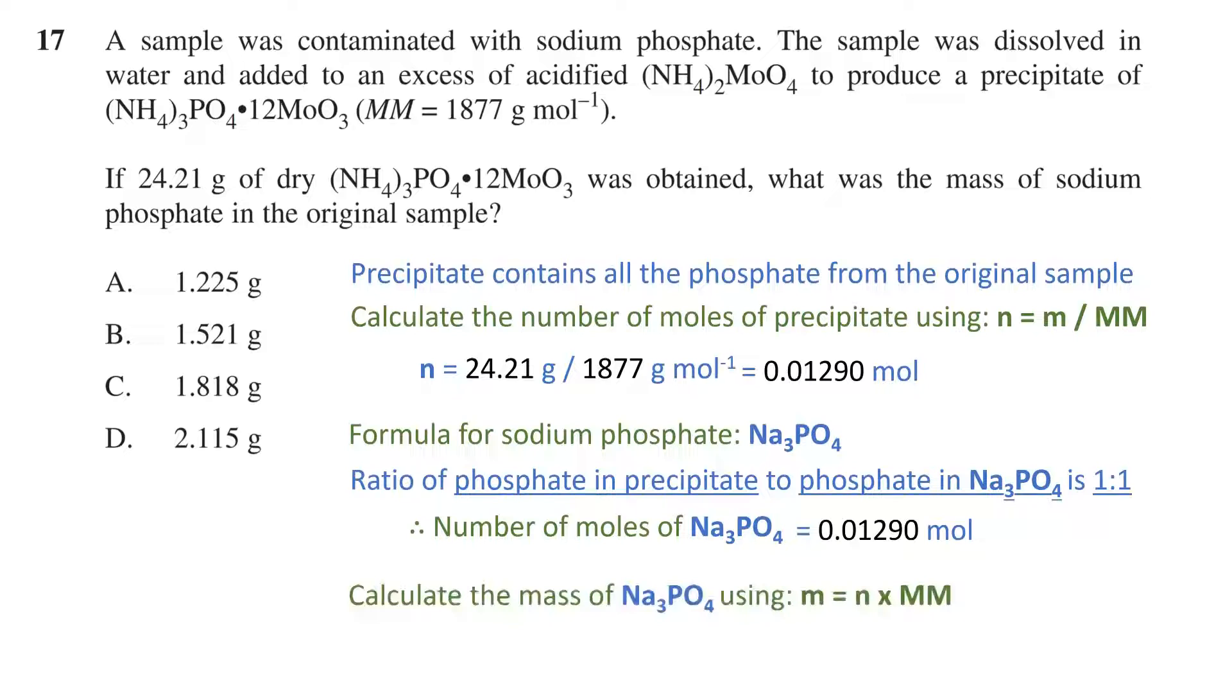Using that, we can calculate the mass of the sodium phosphate using mass equals the number of moles times by the molar mass. We just need to calculate the molar mass of the sodium phosphate, which we'll do on the side here. So, adding the mass of each atom, we get 163.94 grams per mole.